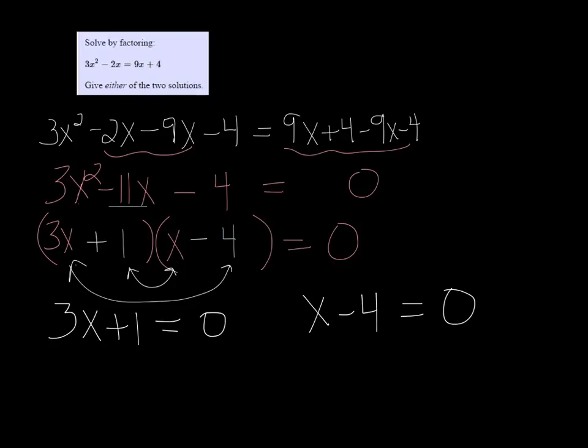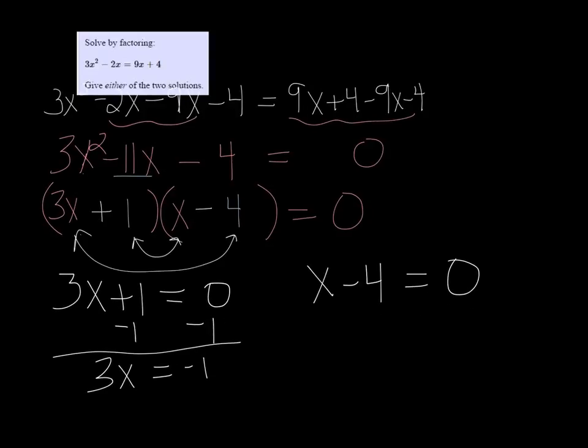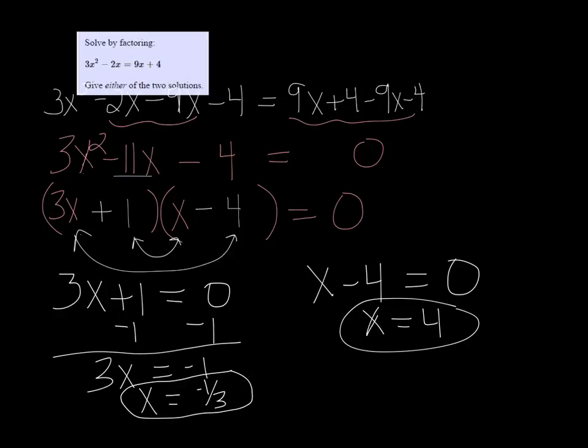So I solve each one of these individually. Subtract 1. We get 3x equals negative 1. And I need to scoot this up here. That means that x is equal to negative 1/3. And here I just add the 4 over, so x equals 4. So we get two answers: x could be 4 or x could be negative 1/3. Either one or both will work.